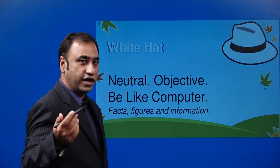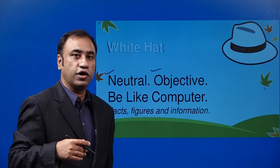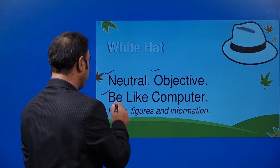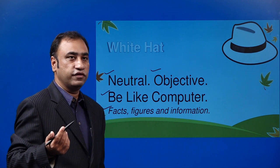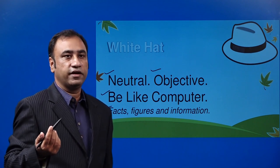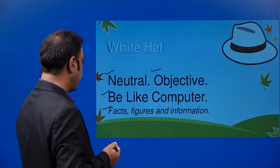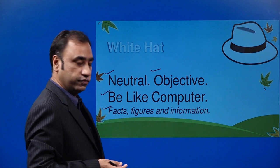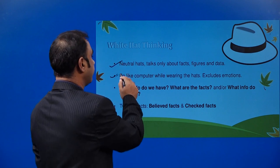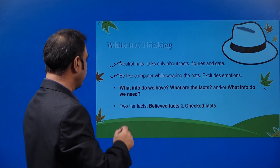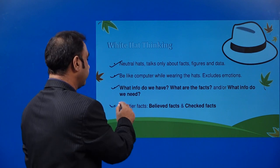White hat — we will know each hat individually. White hat will make you think neutrally and objectively. Be like a computer. White hat will make you think on facts, figures, numbers, and information. If information or facts are not available, white hat will not approve that thinking process. It will always consider facts, figures, and information. It talks only about facts, figures, and data, excludes emotion. What info do we have? What info do we need? Two-tier facts: believed facts and checked facts.